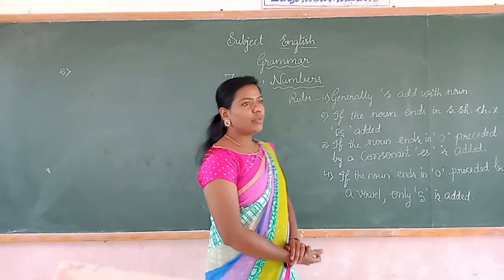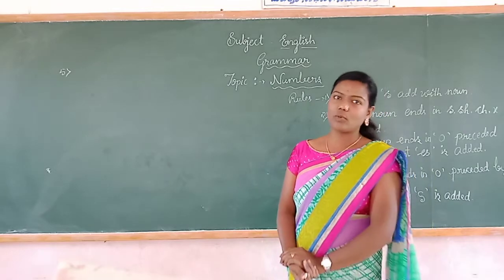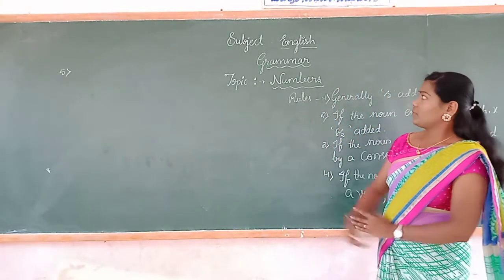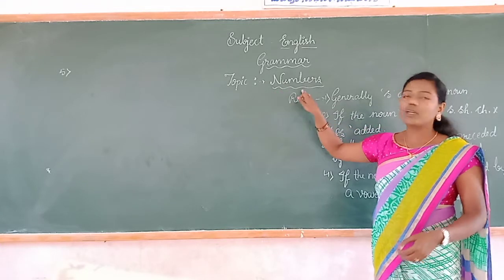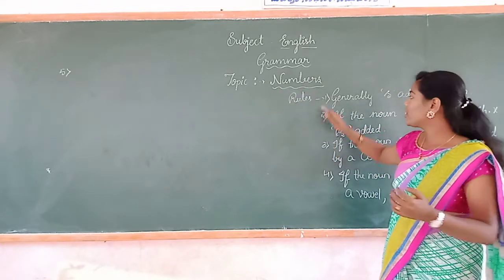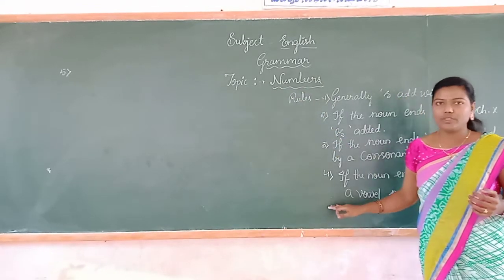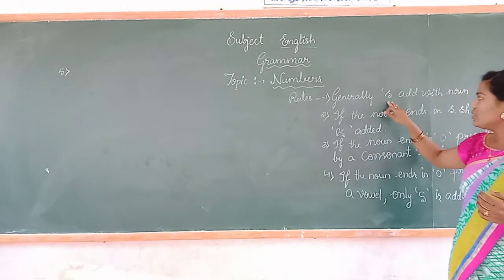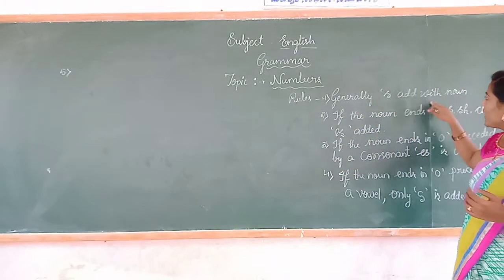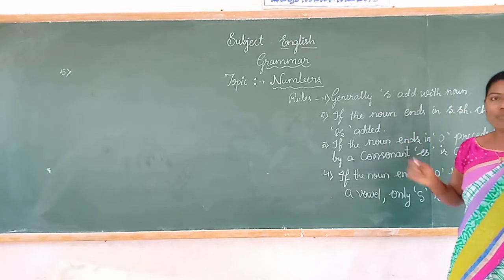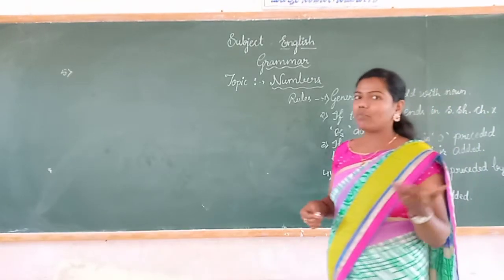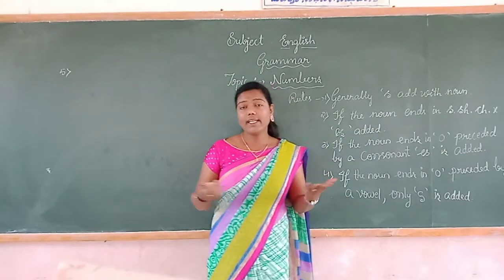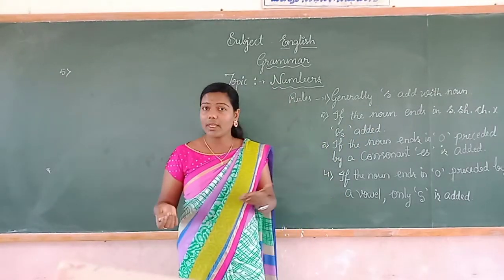Dear students, in the previous class we discussed about numbers — subject English grammar, topic numbers. Regarding all four rules discussed in the previous class: the first rule is generally S is added with a noun. For example, table → tables, bangle → bangles, chair → chairs, tree → trees, monkey → monkeys.